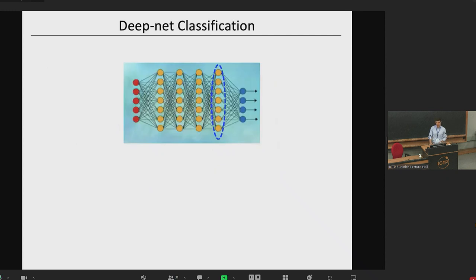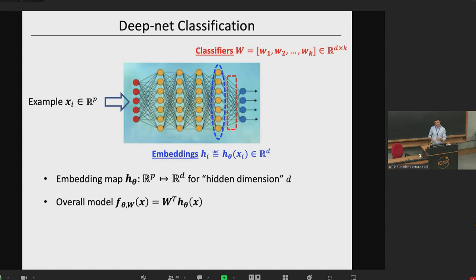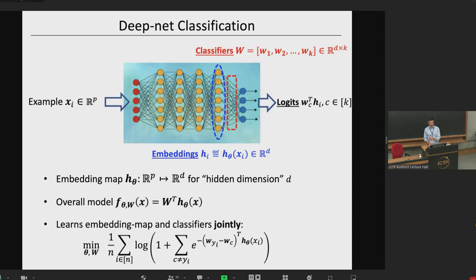How do neural networks learn such mappings? They take input examples X_i and learn an embedding map H of theta, parameterized by previous weights, with hidden dimension D. Once you have the embeddings, you do linear classification: K classifiers, K-dimensional vectors stacked in a matrix W that is D times K dimensional. The overall model takes the form W-transpose times H_theta of X — the logits. The key difference from support vector machines is that you are jointly training the classifiers and the learned embeddings.